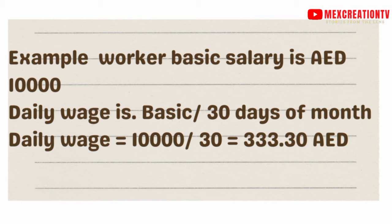For example, we are looking at a person who is earning 10,000 dirhams. The daily wage will be the basic salary divided by 30 days of the month: 10,000 divided by 30, which gives you 333.30 dirhams. That means this person earns 333.30 dirhams per day.